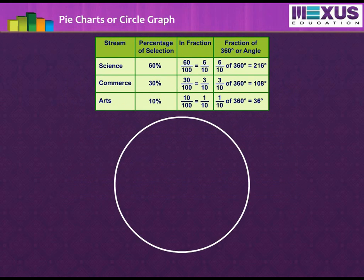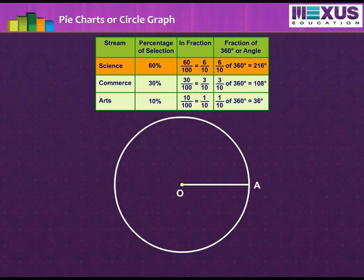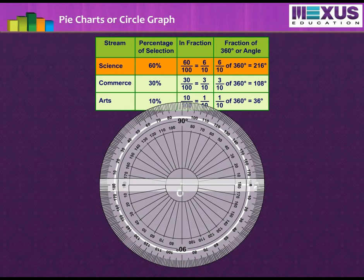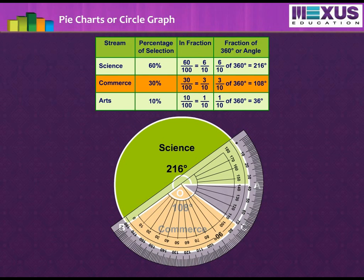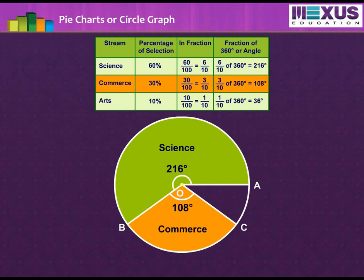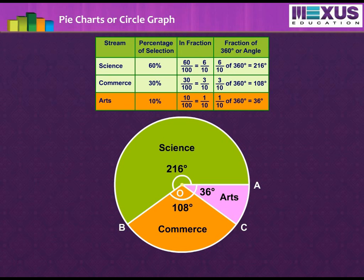Now, draw a circle with any convenient radius. Mark its center O and a radius OA. The angle of the sector for science stream is 216 degrees. So, using the protractor, draw angle AOB equal to 216 degrees. Now, from radius OB, draw angle BOC as 108 degrees for the commerce stream. And finally, we get angle AOC equal to 36 degrees for arts. Hence, we get our pie chart. Similarly, for any given data, we can draw a pie chart by following the above steps.